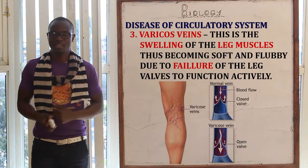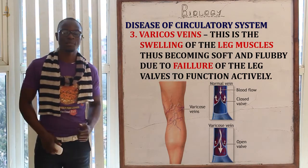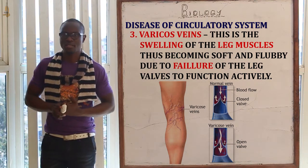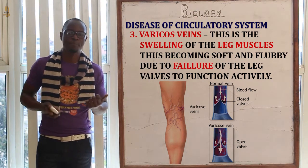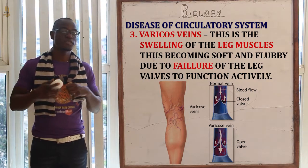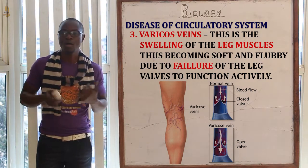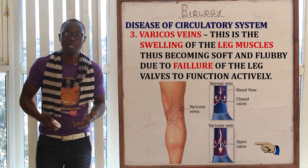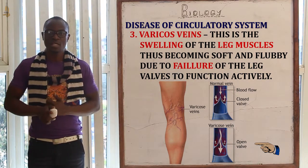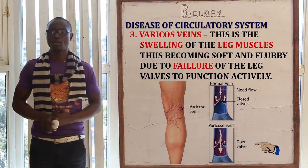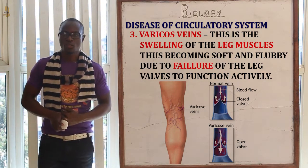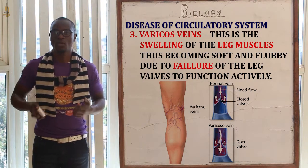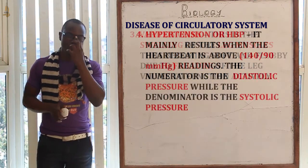Varicose veins is another disease of the circulatory system. This is the swelling of the leg veins, becoming flabby due to the failure of some valves to function properly. As a result, some fluid will build up in the blood vessels, leading to the swelling of the legs. It can be prevented by wearing surgical socks or regular exercise.